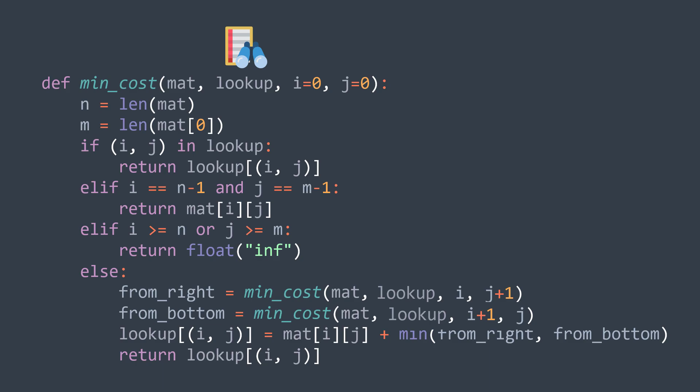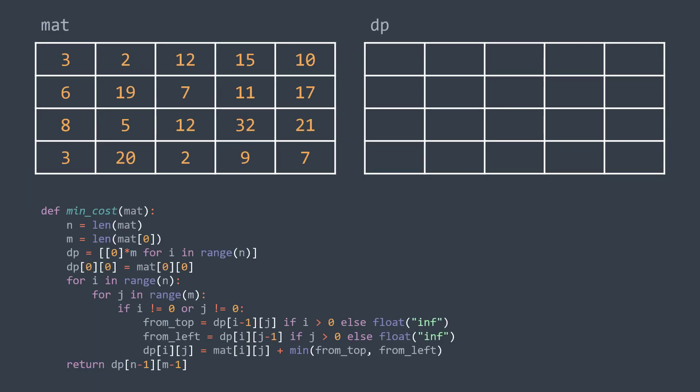Same as with Fibonacci, we add a base case to check if we already calculated the result, and we store the output in the lookup table before returning it. For the bottom-up approach, we use a matrix dp of size n by m, where dp[i][j] represents the minimum cost of going from the top-left cell to the cell at index (i, j). When we finish filling the dp matrix, the bottom-right cell represents the answer, so we return it.